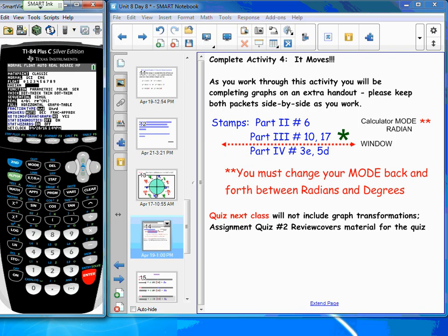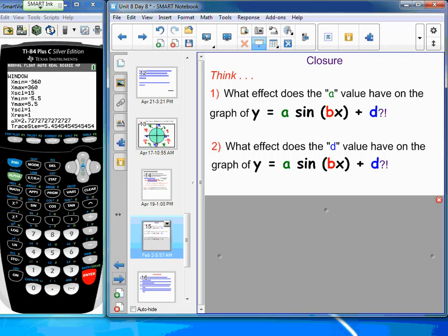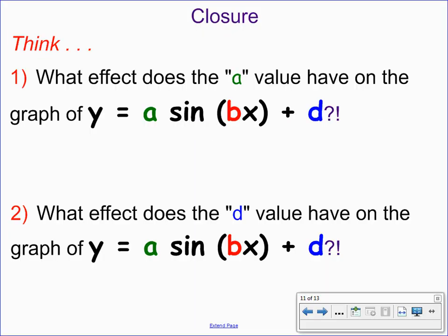Change your calculator window to match the axes of each graph. If the x-axis shows degrees, toggle to degree mode; if it shows pi over twos or two pi over threes, switch to radian mode. For example, change the window from negative 360 to 360 degrees to negative 2π to positive 2π for radian mode. After the number 17 stamp, we'll come together for closure, then work on quiz number two review.